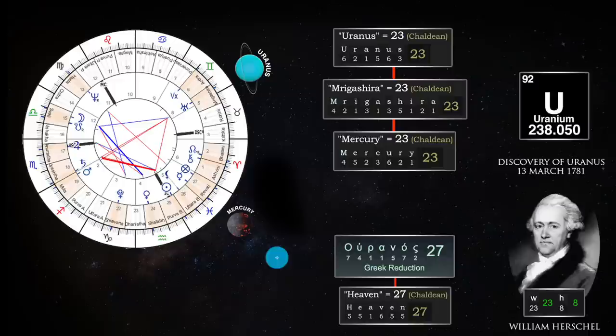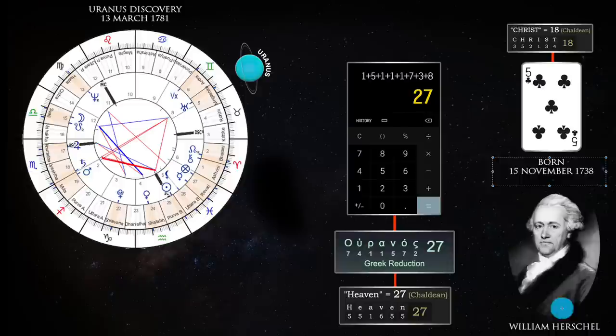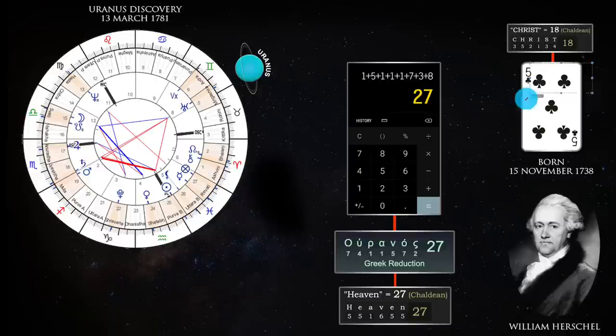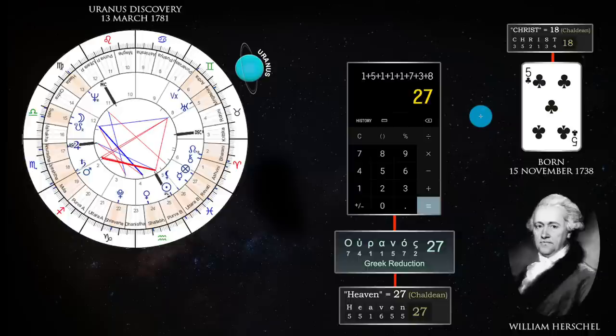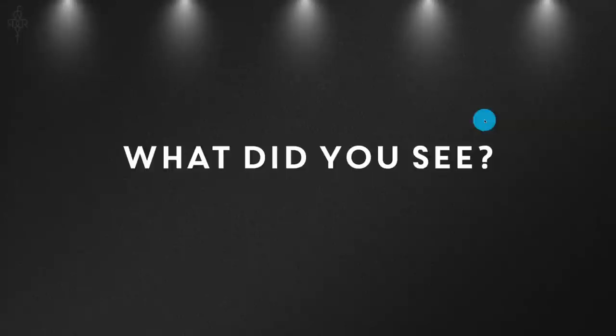Here's the birthday of William Herschel — 15 November 1738. Do his life path — look at what it equals. Scripted reality: the guy was supposed to find it — 27. Here's his birth card: the Five of Clubs, which is the 18th card in the deck, and there's the Christ. So the kingdom of the Christ is Uranus — Aquarius, the father. 'No one gets to the father except through me' — well there you go: Christ and Uranus are all tied together.